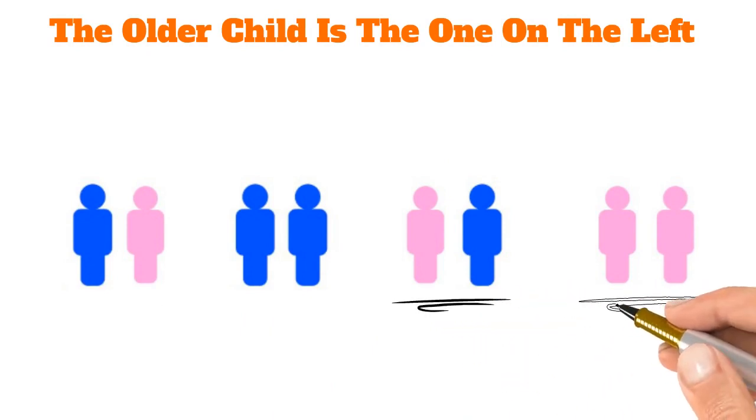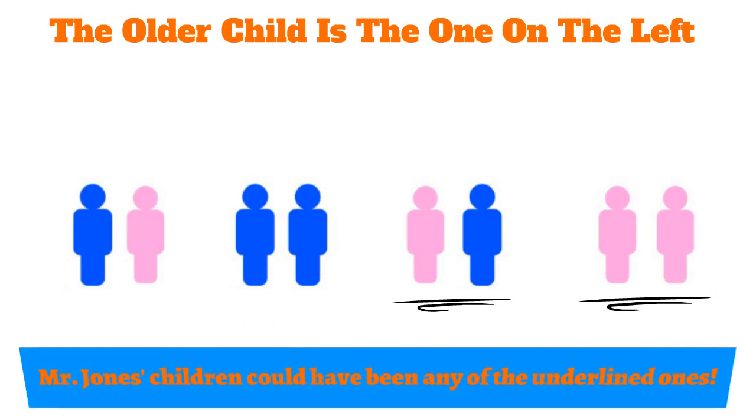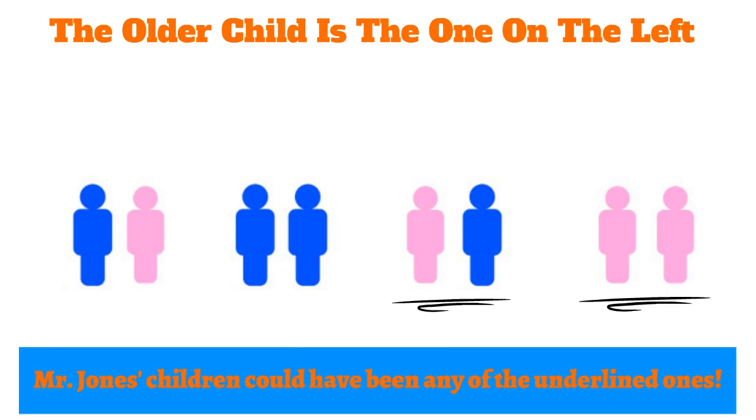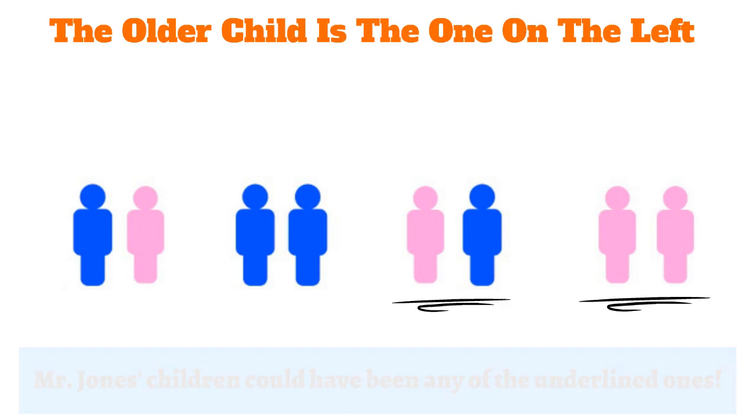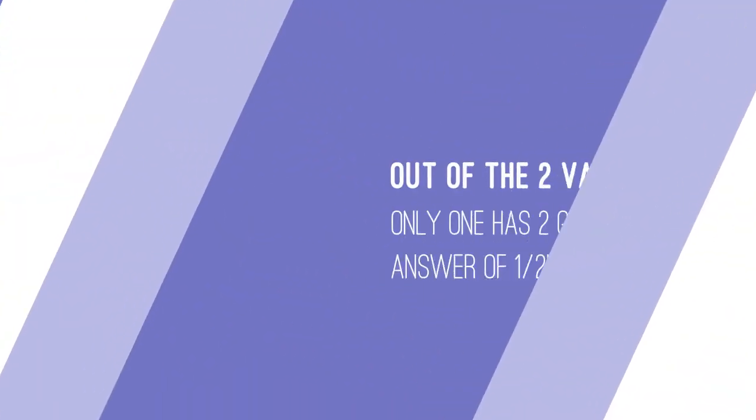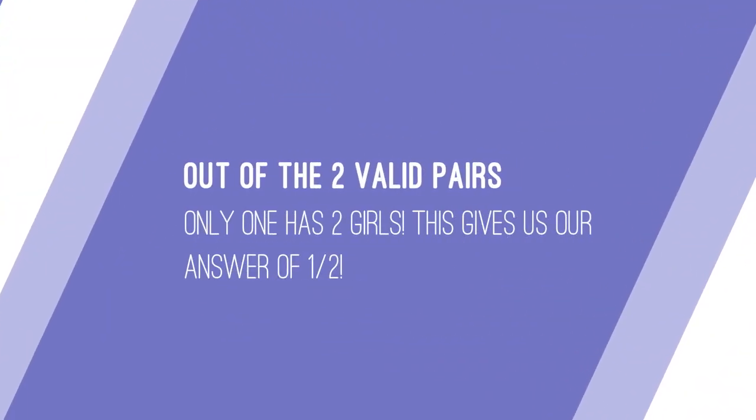This time only two of the combinations work because we need an older girl. Mr. Jones' children could have been any of the underlying combinations. Out of the two valid pairs, only one has two girls. This gives us our answer of one half.